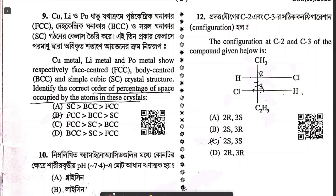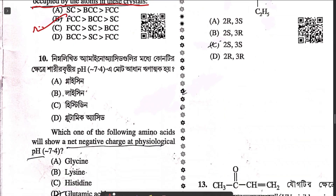Question nine: copper, lithium, and polonium show FCC, BCC, and simple cubic crystal structures respectively. Identify the correct order of percentage of space occupied. Greater the number of atoms per unit cell, greater the percentage of space occupied. So FCC > BCC > simple cubic. The answer is B.